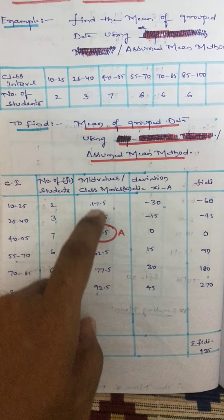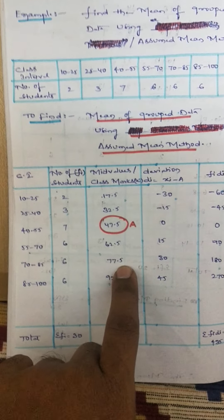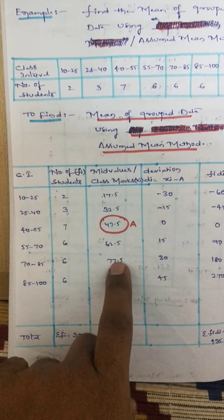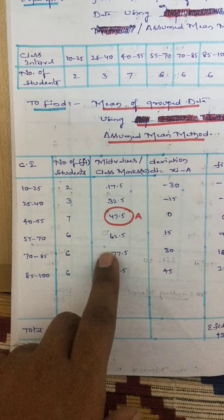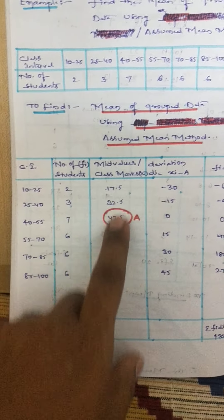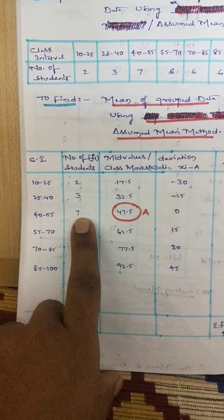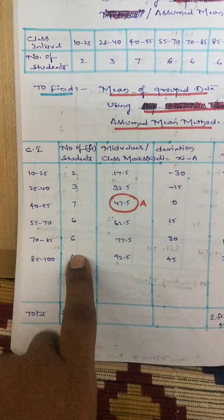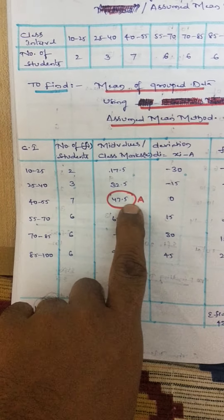It is not compulsory that we have to take A as the third value. You can mention any value here, it's up to you. But my suggestion is, what is the highest frequency here? In the given data, the highest frequency is 7, so take that value as A.